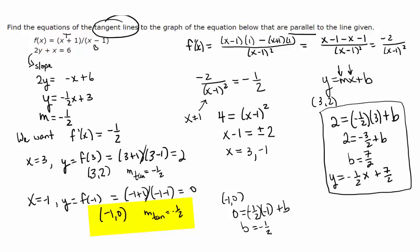Now plugging back in, y equals negative 1 half x minus 1 half. So we have our two equations of tangent lines.